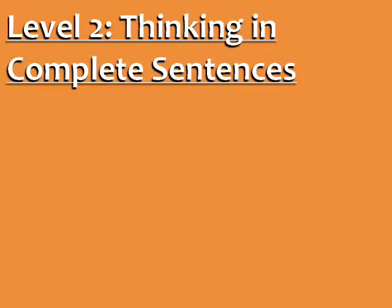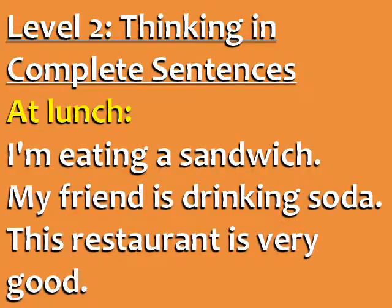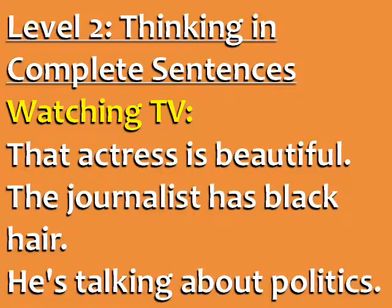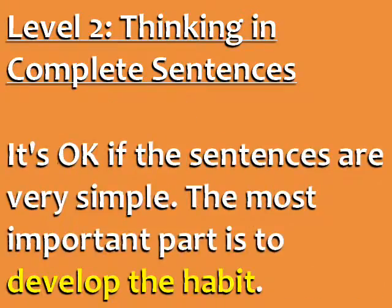Level 2: Thinking in complete English sentences. On this level, you think in complete phrases and sentences during the day. When you're at lunch, think: I'm eating a sandwich. My friend is drinking soda. This restaurant is very good. When you're watching TV, think: That actress is beautiful. The journalist has black hair. He's talking about politics. It's okay if the sentences are very simple. The most important part is to practice and develop the habit of thinking in complete sentences in English.